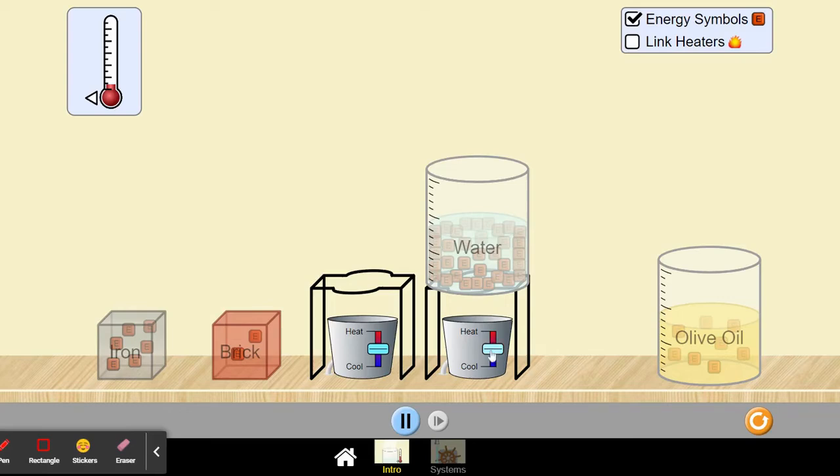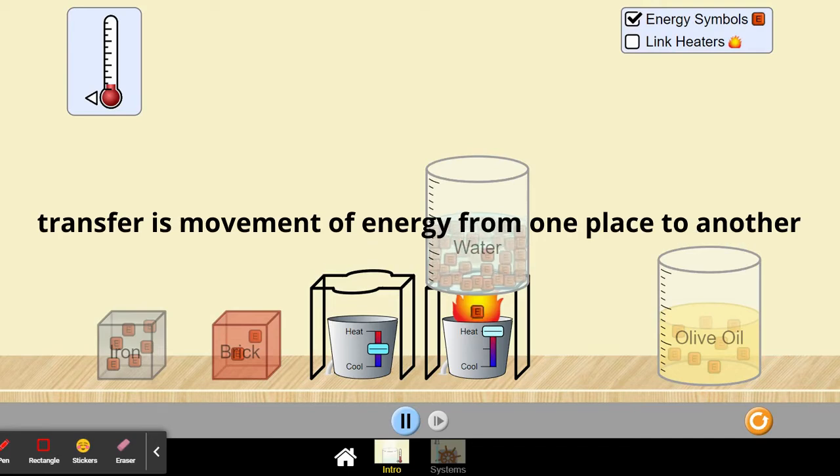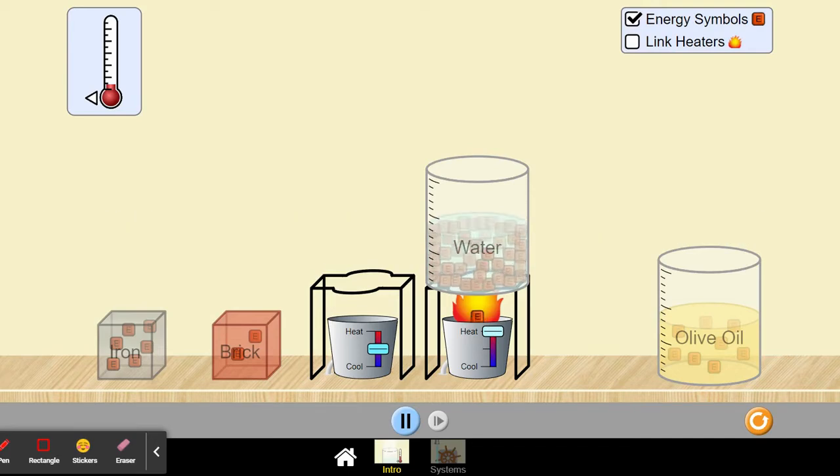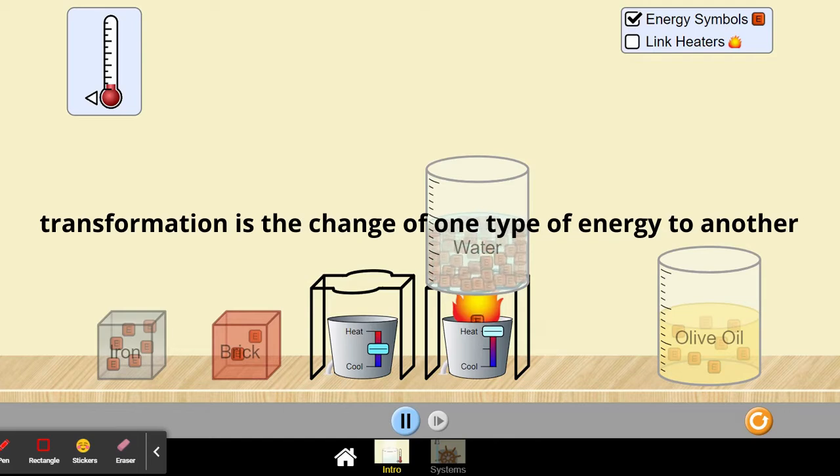The difference between transfer of energy and transformation of energy is that transfer is movement of energy from one place to another, and transformation is the change of one type of energy to another.